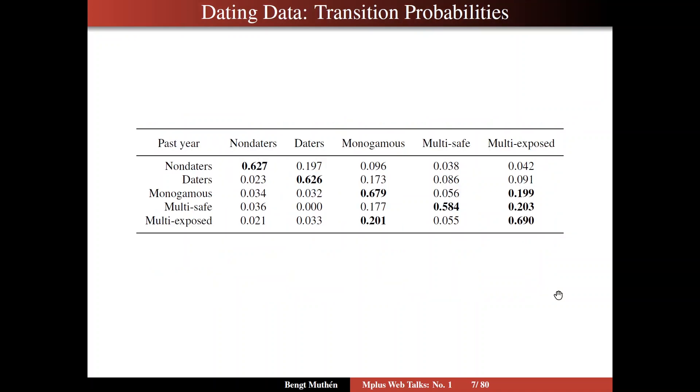On slide seven, we have the same columns, but now the rows are also the latent classes. So we have a cross-classification. So on the diagonal, you see high probabilities, bolded, that corresponds to staying in the same class. So 0.627 is the probability that if in a year you were a non-dater, you will be a non-dater in the following year with this probability. Same thing for daters, for monogamous.